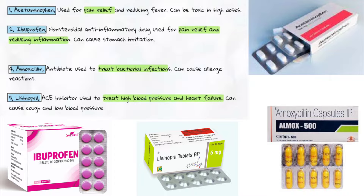3. Aspirin — used for pain relief, reducing inflammation, and preventing blood clots. Can cause stomach irritation and increase bleeding risk. 4. Amoxicillin — an antibiotic used to treat bacterial infections. Can cause allergic reactions.